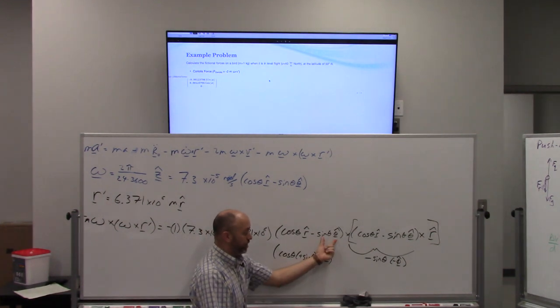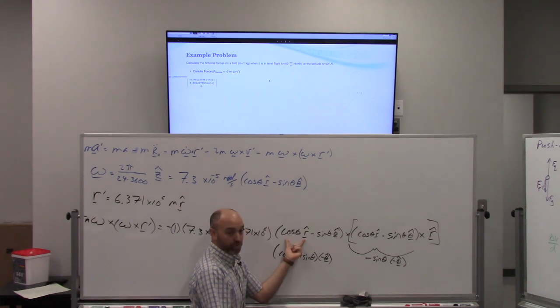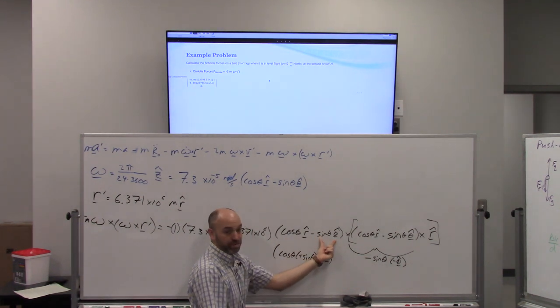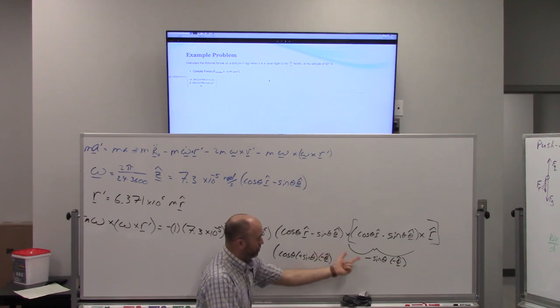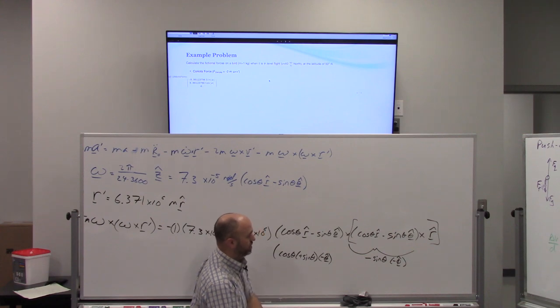And we're going to get negative theta. And then we're going to do the second one over here. So this is just this one. Now we'll do this one. This crossed with that. What's theta cross phi? R hat. R.